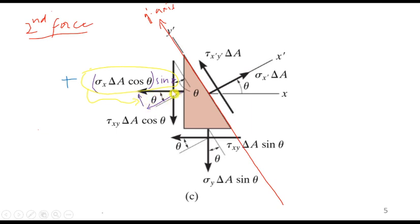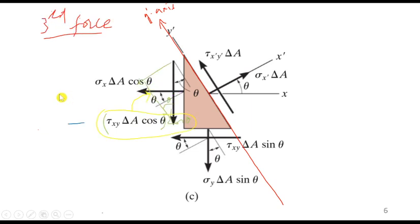If this is a triangle and this angle is theta, then this will be the sine component, and since it is along the positive axis it is written as positive. For the third force, we resolve it into two components — one along y' and the other perpendicular. This component is along the negative y' axis, so it is written as negative. Its value is tau_xy times delta_A times cos theta times cos theta, because the angle adjacent to this is theta, giving a cosine component.